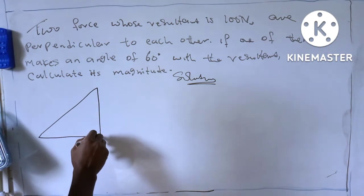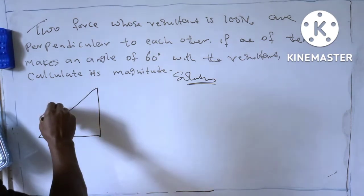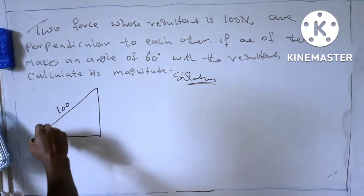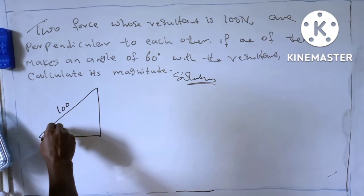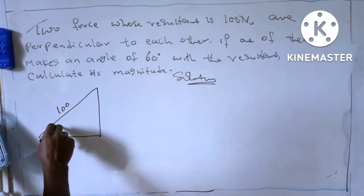Two forces, resultant is 100 Newton, angle 60 degrees. If one of them makes an angle of 60 degrees with the resultant...